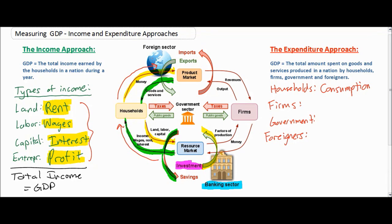The next type of expenditure is spending by firms on capital goods — we call this investment. When we use the word investment here, we're talking about a very particular type. For example, paying for private school tuition is technically not investment from an economic standpoint; what you're really doing is buying the service of education in the product market, which is a form of consumption. Investment from a macroeconomic standpoint includes all spending by firms on capital goods — the tools and technology used in the production of goods and services. Whenever a firm buys a new piece of technology or capital, this is considered investment.